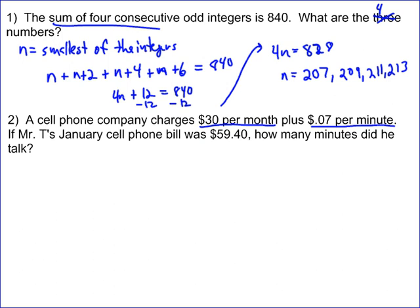If Mr. T's January cell phone bill was $59.40, how many minutes did he talk? Well, we're only talking about one month, so we know we only have to worry about $30. So we got $30 plus 0.07 times T, which we're going to let be minutes. And whenever you do a problem like this, you need to let me know what your variable is. So I'm going to say T is the number of minutes. And that's because that's what the question asked for. The question said, how many minutes? That's what you're looking for, T.